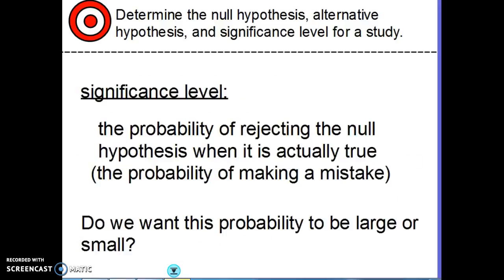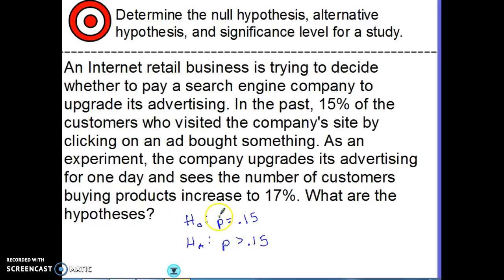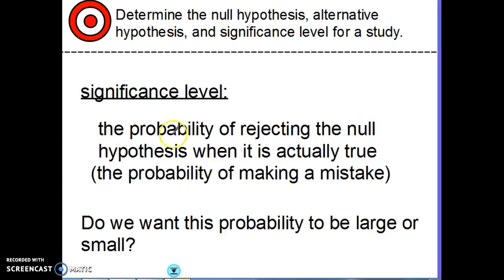The significance level is the probability of rejecting the null hypothesis when it is actually true. So, the significance level is the probability that — in our last situation — I would reject the null hypothesis and think a change has occurred when actually there has been no change. Essentially, a way of thinking about the significance level is the probability of making a mistake — of choosing the wrong way.